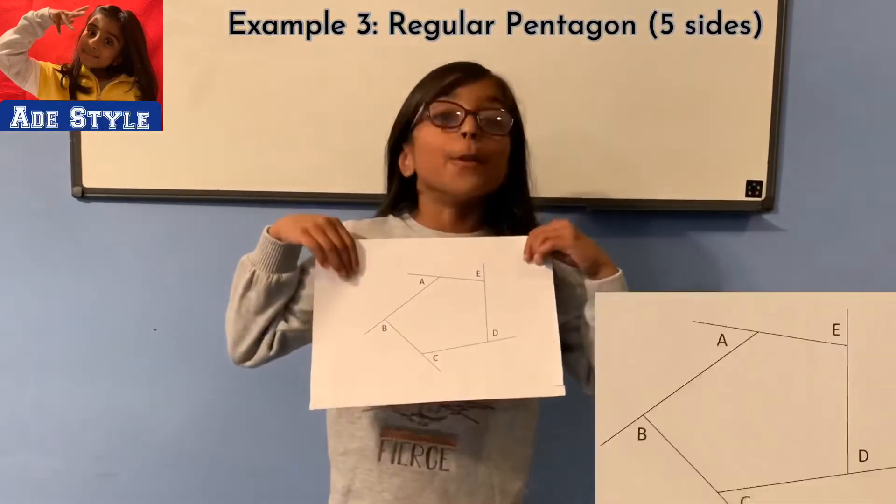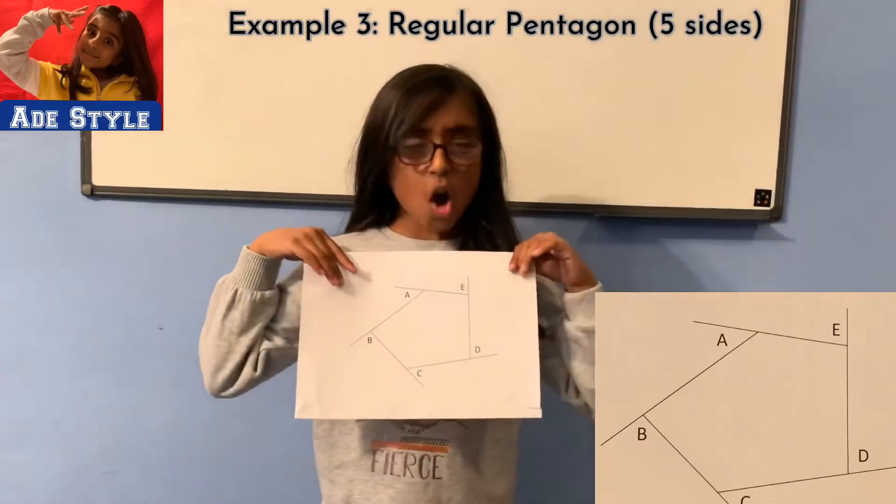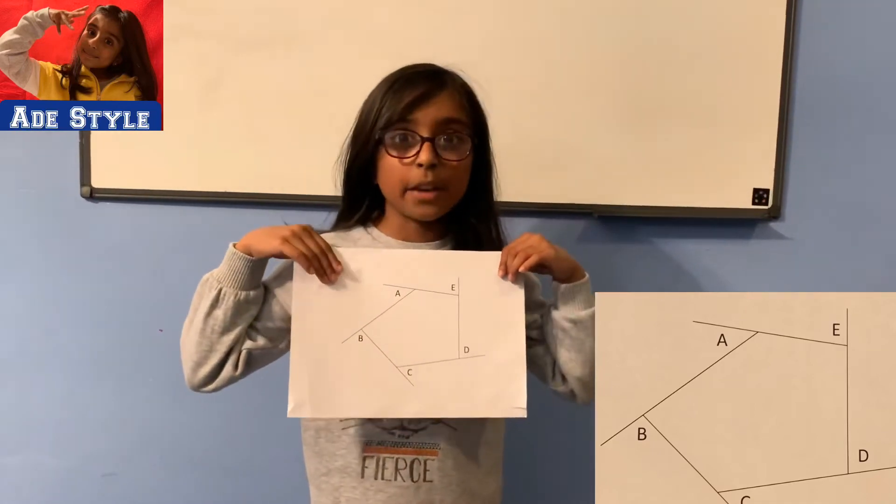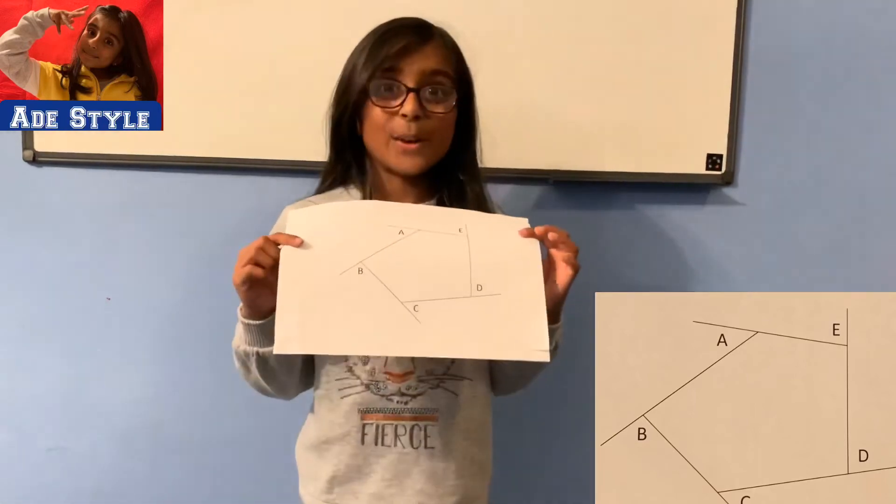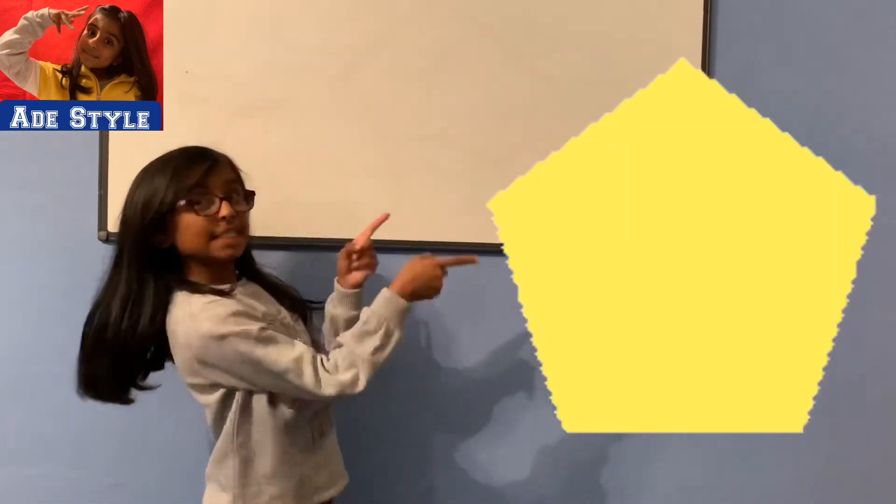Example 3: A regular pentagon. Oh, but this is not a regular pentagon. Why? This is not a regular pentagon because all its sides are not equal. This is a regular pentagon.